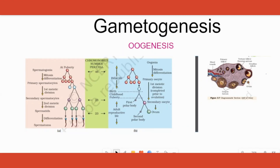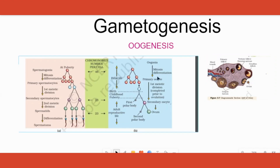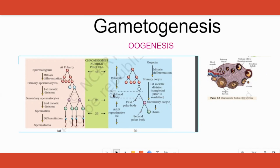The initiation — only the starting part — happens when the girl baby is still inside the mother's womb, in the embryonic stage. Her ovary has developed, and the initial part of oogenesis is happening there. So when is it initiated? In the embryonic stage — the baby is not yet born. Please write 'embryonic stage,' not 'before birth.'